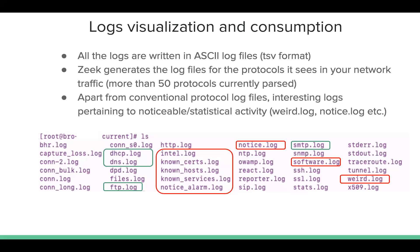Apart from conventional log files, Zeek generates logs that are noticeable and you can take advantage of. Software.log is one I love. Known services.log - you get appreciation just by looking at that file, realizing how blind you were to your network and what services you were running. We'll be discussing unconventional log files like known services, notice, software, and intel. I haven't shown screenshots for the conventional log files because they're pretty conventional, but I'll show how they look in upcoming slides.